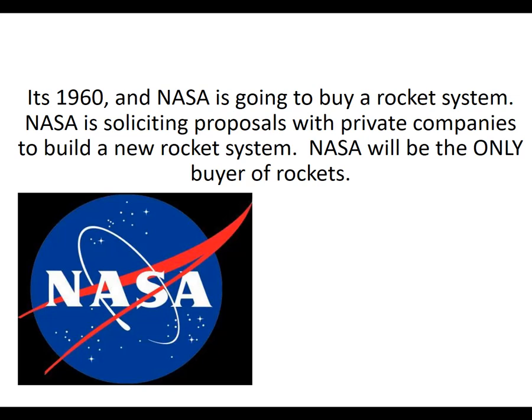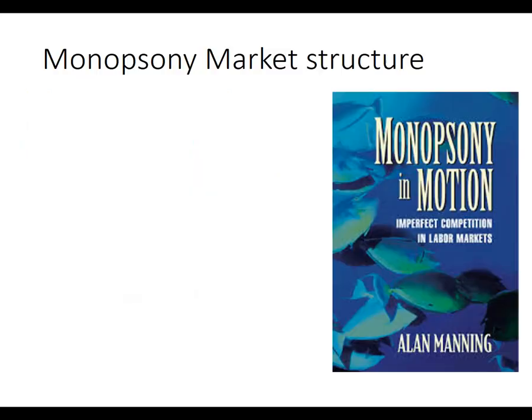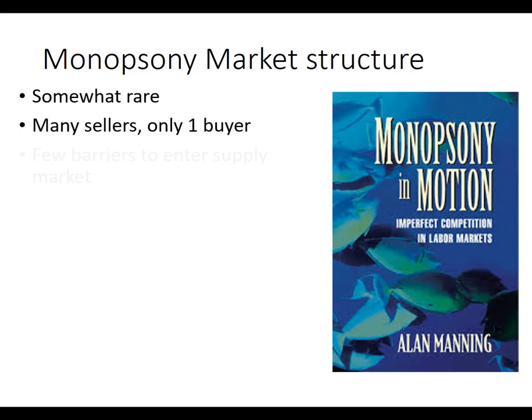That's essentially what monopsony is: you've got a single buyer with considerable buying power, and there's a bunch of sellers who are going to have to try to sell at that lower price. Another example: exotic fish. There's not a lot of purchasers for exotic fish. Those big-time aquariums tend to buy those fish, and they're able to knock the price down. It's not a very common market structure, but essentially you've got many sellers and one buyer.